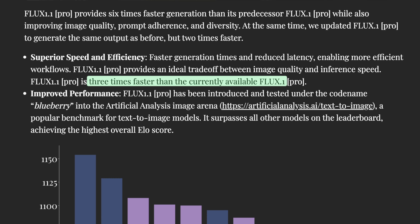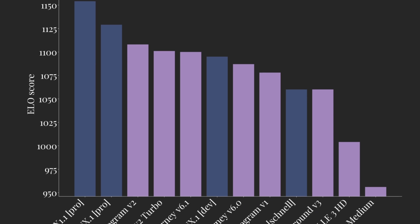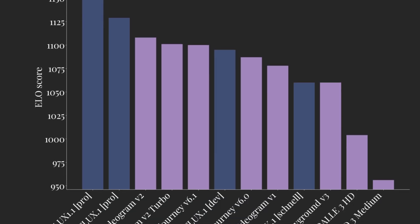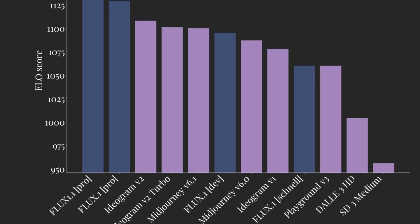Performance in generative image models compared to video or text models can mean pretty different things. Flux 1.1 Pro was introduced and tested under the codename Blueberry in the Artificial Analysis image arena. It surpasses every other model on the leaderboard, achieving the highest overall ELO score — a combined measure of efficiency, speed, latency, and general capability. Flux 1.1 Pro handily outperforms Flux 1 Pro and even closed-source models like Midjourney version 6.1, Ideogram V1, and Playground V3. DALL-E 3 HD is basically no longer a relevant model here.